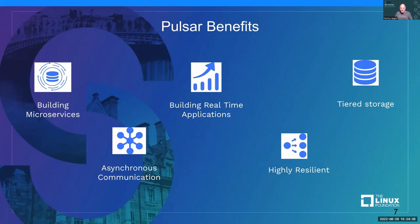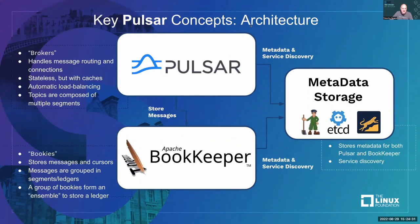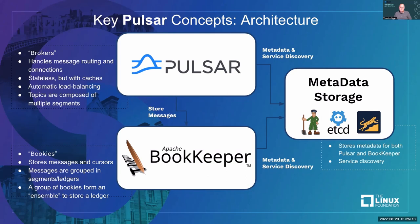Asynchronous communication is a bare minimum. It's a highly resilient system with built-in tiered storage. The architecture separates into three different types of servers: Pulsar brokers handle message routing and connections — stateless with a cache, automatically load-balancing. Behind the scenes, messages get stored in Apache BookKeeper bookie nodes. Both brokers and bookies use a metadata storage layer — either Apache ZooKeeper, etcd for Kubernetes users, or RoxyB — for metadata and service discovery.